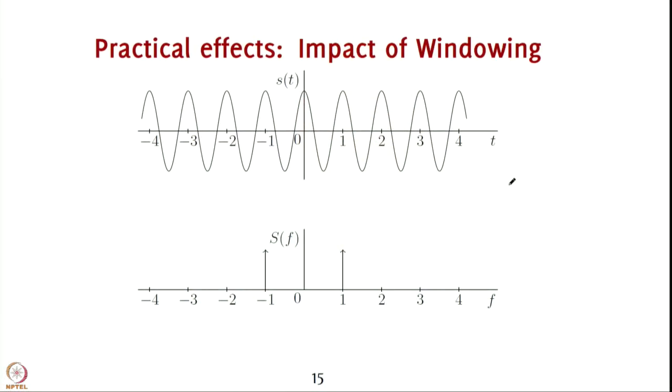Another practical effect is the impact of windowing. As you are aware, a cosine like the one shown here is a time unlimited signal whose Fourier transform is actually half of delta of f minus f0 plus half of delta of f plus f0.